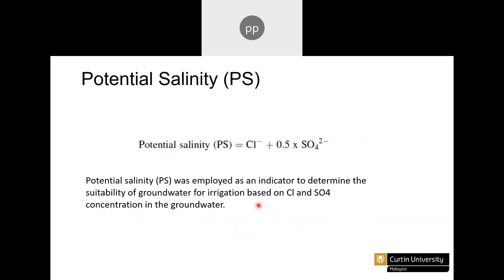Another index is Potential Salinity, whose equation uses chloride and sulfate. This index determines the suitability of groundwater for irrigation based on these two parameters, because chloride is associated with salinity and sulfate is a kind of nutrient present in groundwater.